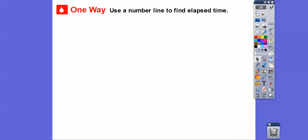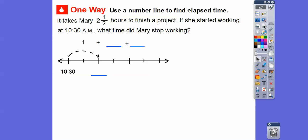We can use a number line to find the elapsed time. It takes Mary 2½ hours to finish a project. If she started working at 10:30, at what time will she stop working? If we add 1 hour from 10:30, it's going to take us to 11:30. And then if we add another hour, 11:30 plus 1 is 12:30. There's our 2 hours. Now we're going to add a half an hour, 30 minutes. So 30 minutes to 12:30 takes us to 1 o'clock.